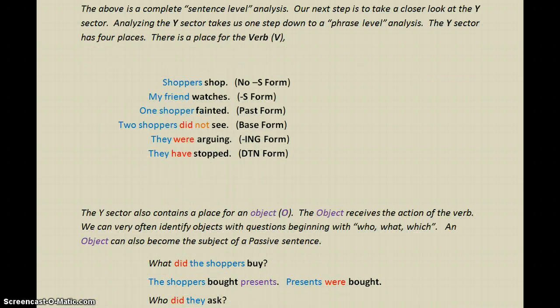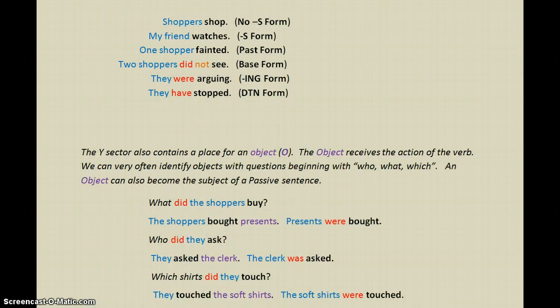Now next, when we take a look, the Y-sector also contains a place for an object. The object is really what receives the action of the verb. Very often we can identify objects with questions beginning with who, what, or which. An object can also become the subject of a passive sentence, and that's another way we can decide what the subject is.